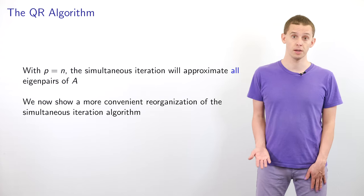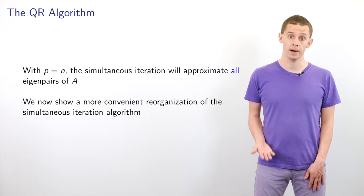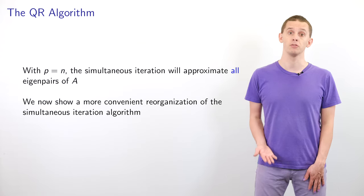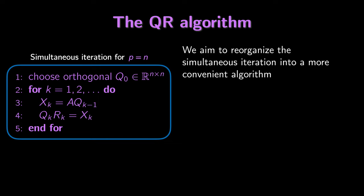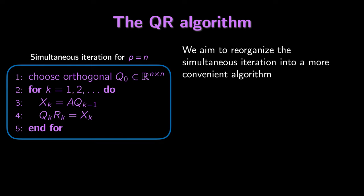We'll now look at a way to reorganize the simultaneous iteration, which will provide insight about how it works and result in an algorithm that is simpler to implement. The starting point for deriving the QR algorithm is the simultaneous iteration for the case when p equals n, approximating all eigenpairs. Writing out the simultaneous iteration: we choose an orthogonal n by n matrix Q_0, and then for k equal 1, 2 and so on, we compute x_k equal to A times Q_(k-1), perform the QR decomposition so that Q_k times R_k equals x_k, and repeat. We'll use underlines on Q_k and R_k matrices that appear in the simultaneous iteration to distinguish them from new definitions we'll introduce.